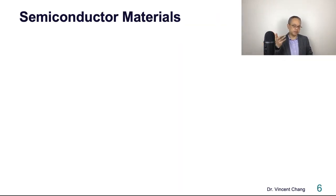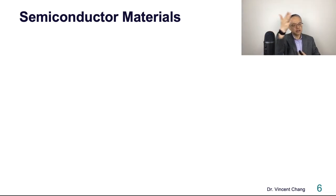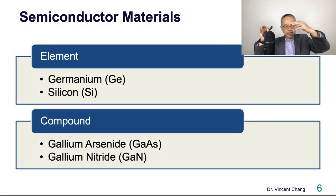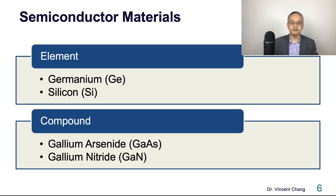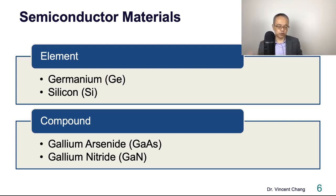So for semiconductor materials, the point I want to make from these slides is the journey from sand to silicon, from silicon to integrated circuit, and from IC chip to a circuit board. The underlying material behind this technology is silicon. But if you look at the big picture of semiconductor materials, you can classify them into two big categories. The first is the element semiconductor, and the second is the compound semiconductor.